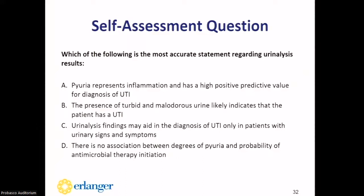Self-assessment question two: which is the most accurate statement regarding urinalysis results? A: pyuria has a high positive predictive value for UTI diagnosis. B: turbid or malodorous urine likely indicates UTI. C: urinalysis findings may aid in UTI diagnosis only in patients with urinary signs and symptoms. D: there is no association between pyuria degree and antimicrobial initiation probability. The answer is C—while urinalysis can aid in diagnosis, it should only be ordered in patients with true indications and should not be used alone to diagnose UTI without signs and symptoms.